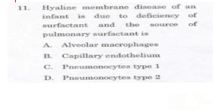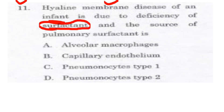We have already discussed question 11. We will discuss hyaline membrane disease of an infant. In the infant, there is hyaline membrane disease, also called Respiratory Distress Syndrome. This is caused by a deficiency of pulmonary surfactant.